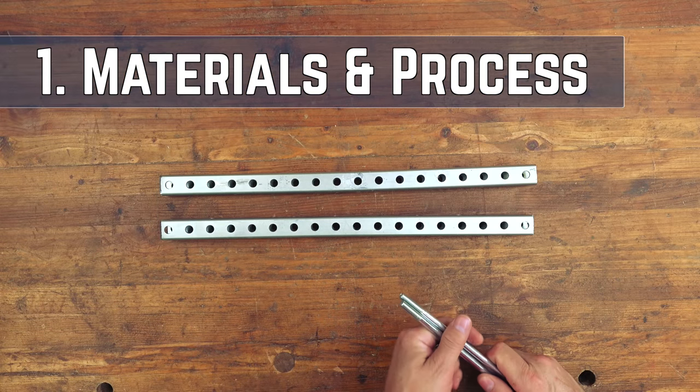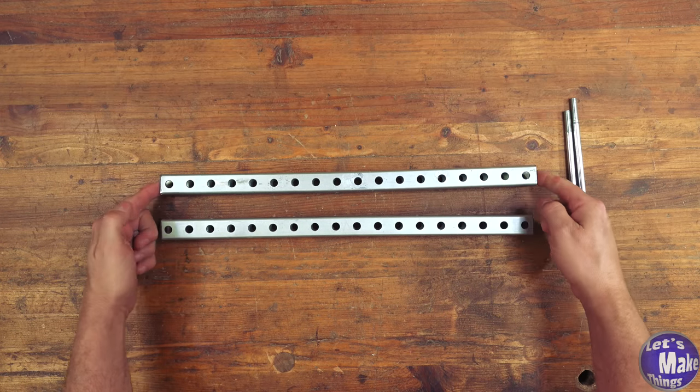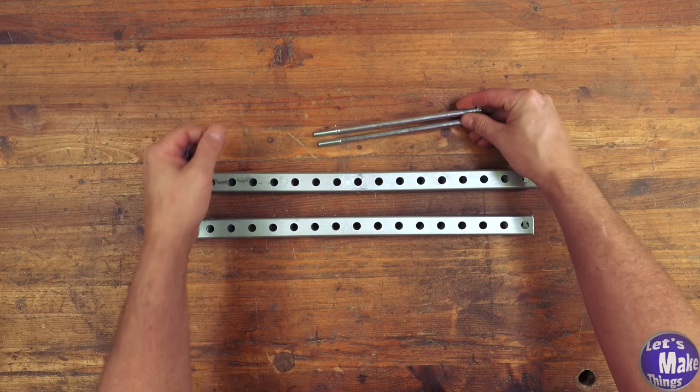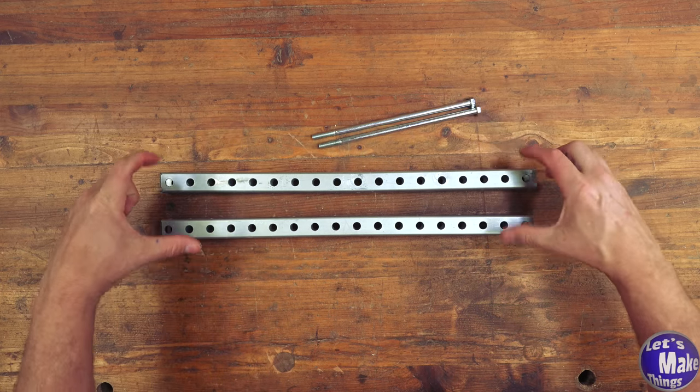To make these, you really only need a few materials. You'll need the square tubing, a couple nuts, and some bolts. I'm using really long bolts here so that I have a very wide area that I can open this up to.